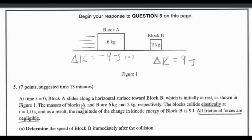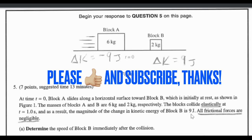We have block A sliding along a horizontal surface, and we have block B that's at rest. The blocks collide elastically at t equals 1 second. As a result, the magnitude of the change in kinetic energy of block B is 9 joules. All frictional forces are negligible.